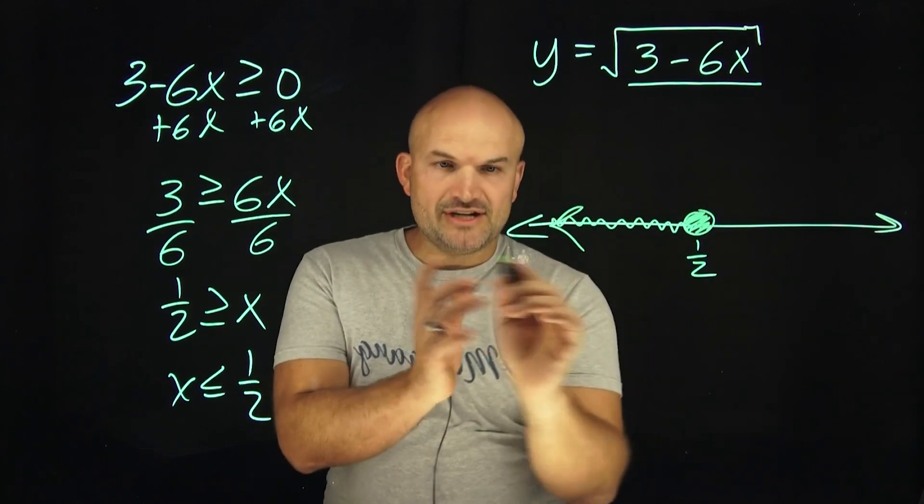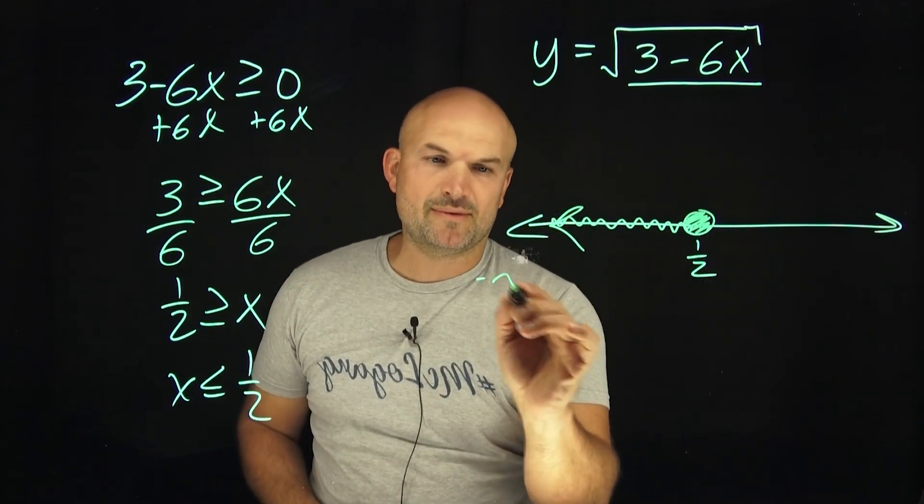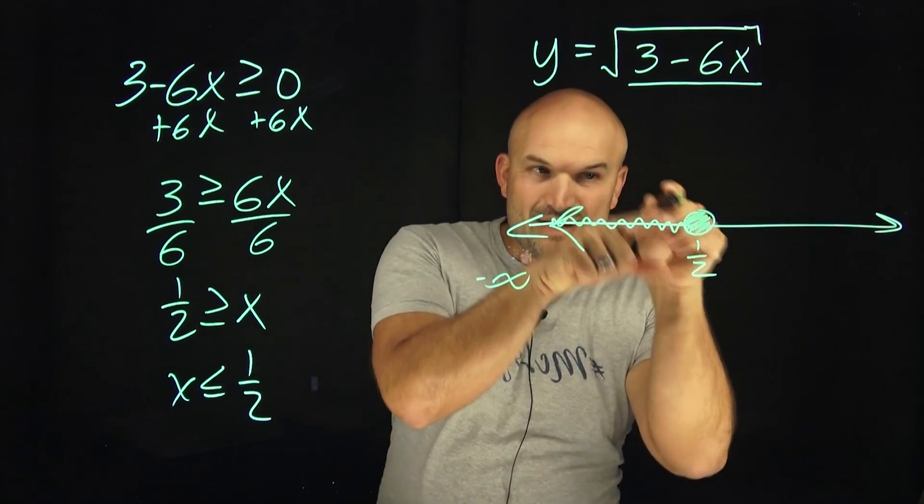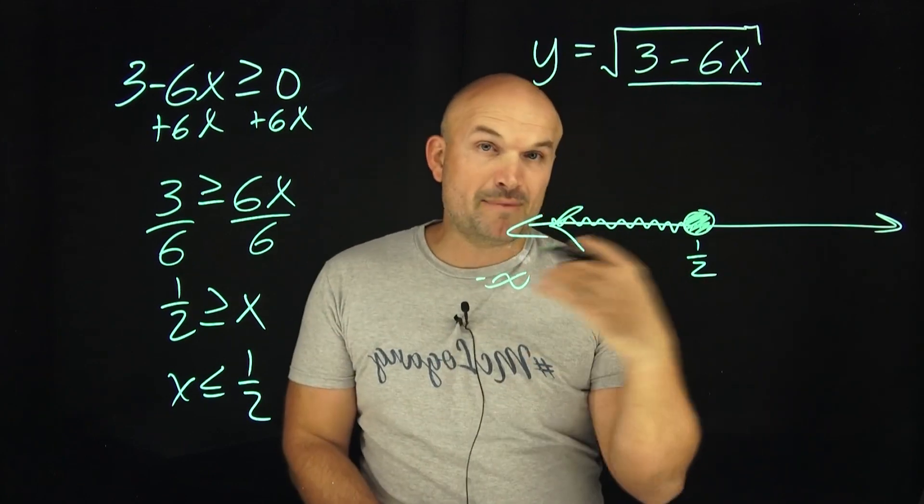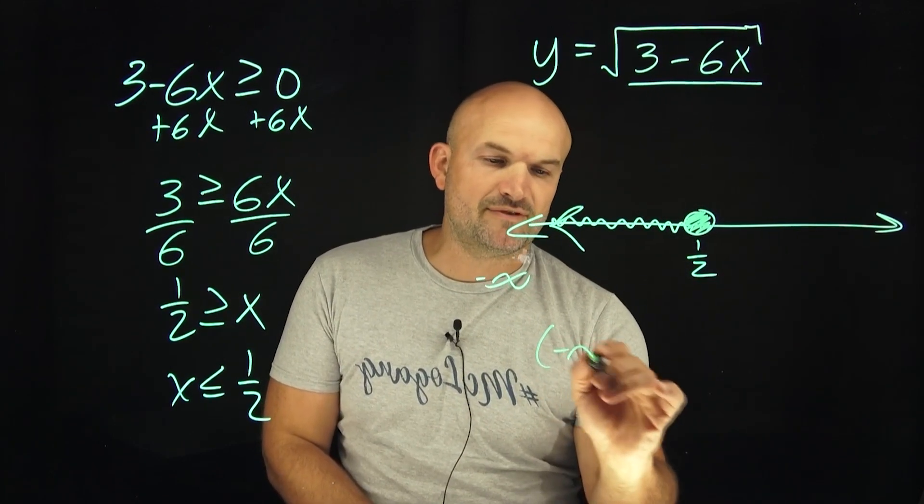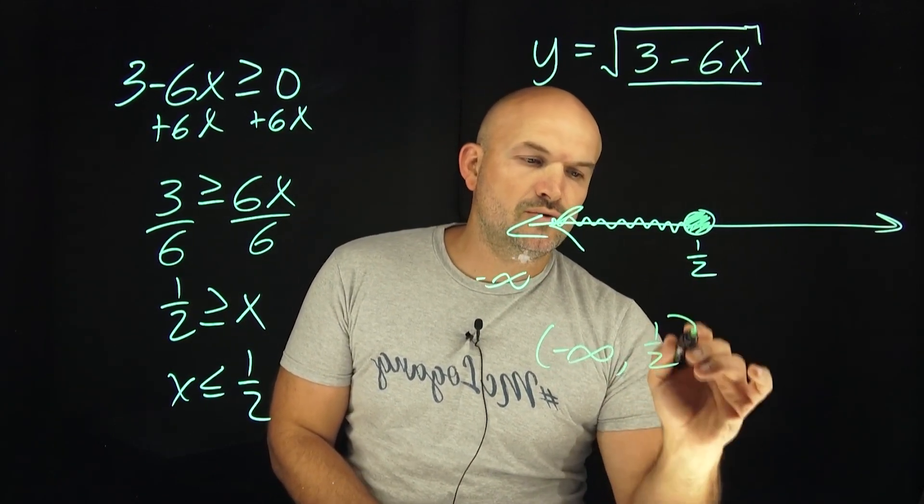So therefore on interval notation here, keep on going to the left is going to be represented by negative infinity. To the right would be infinity. But again, we have a hard stop here at one half, right? We can't go any number past one half. So therefore my interval notation for this problem is going to be from negative infinity to one half.